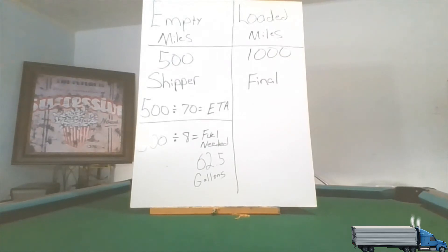It says empty and loaded miles. When you got the assignment, you were empty, so from the point where you got the assignment you are 500 miles away from the shipper where they want you to pick up the load. Once you get to the shipper 500 miles later and get loaded, from there it's a thousand miles to take it to the final destination. Total miles: 1500.